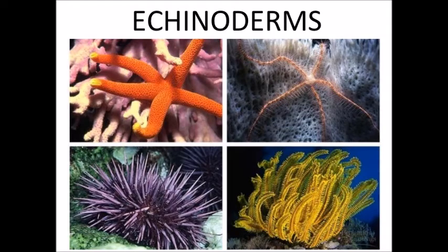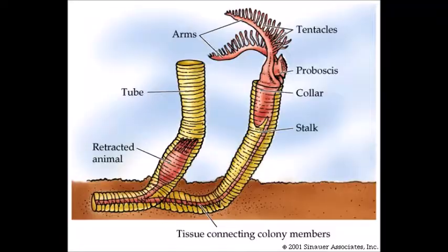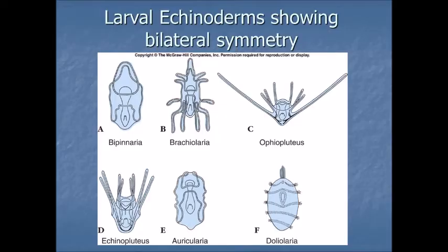Echinoderms are starfish, brittle stars, sea lilies, sand dollars, sea urchins, etc. And hemichordates are acorn worms, pterobranchs, and graptolites. Echinoderms possess bilaterally symmetrical larvae, but they develop radial symmetry as they grow, which is evidently an adaptation to a sessile lifestyle.